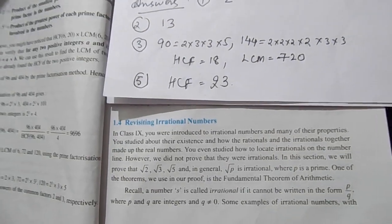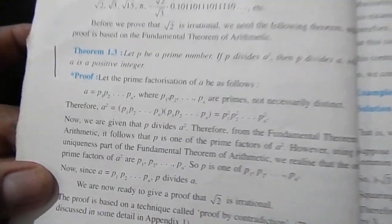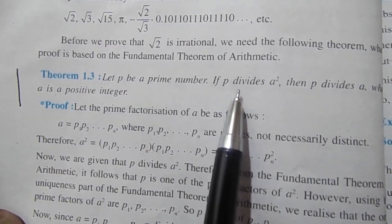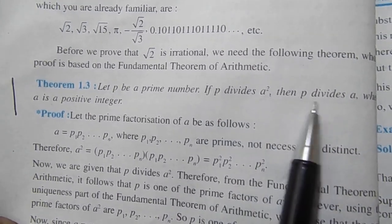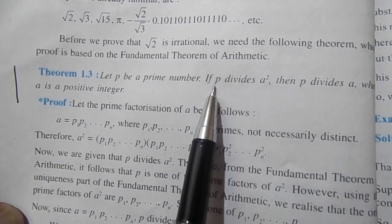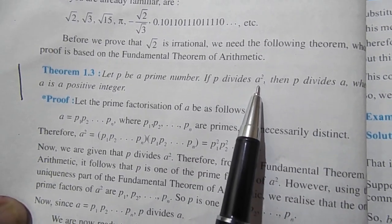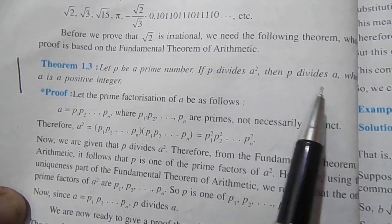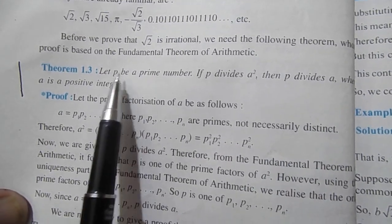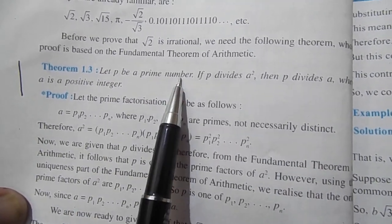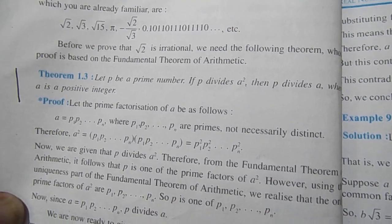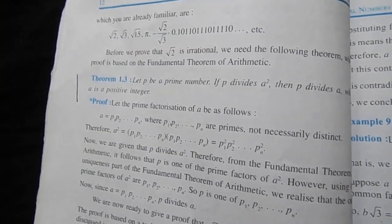Before we start the next exercise, there is one theorem — Theorem 1.3. Let p be a prime number. If p divides a², then p divides a, where a is any positive integer. For example, if 5 divides 5×5, then 5 also divides 5. We will use this theorem in the upcoming exercise.